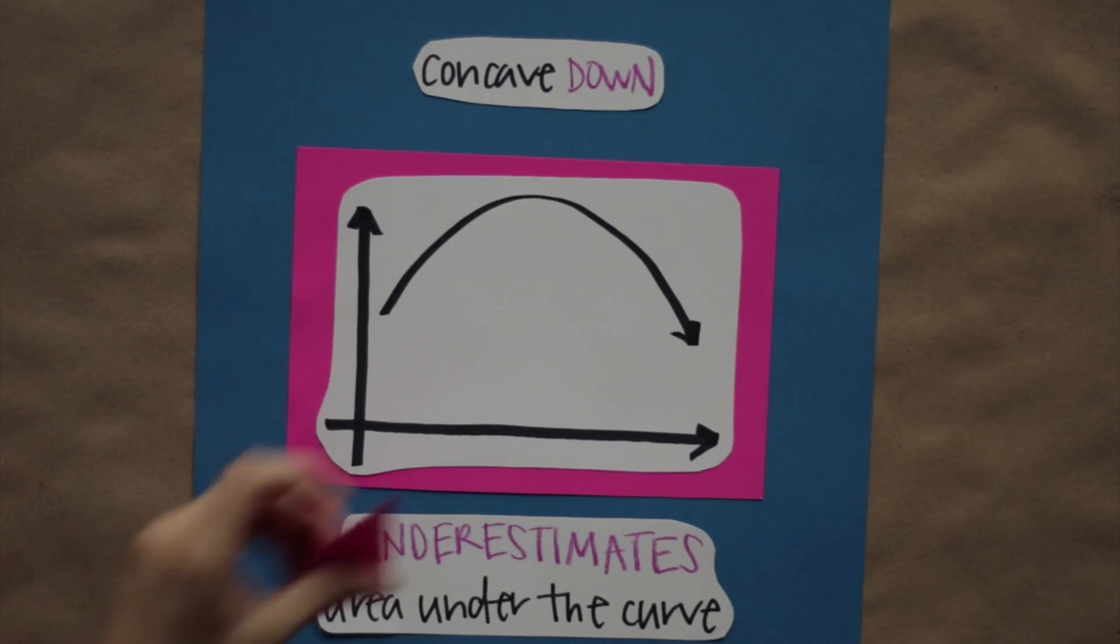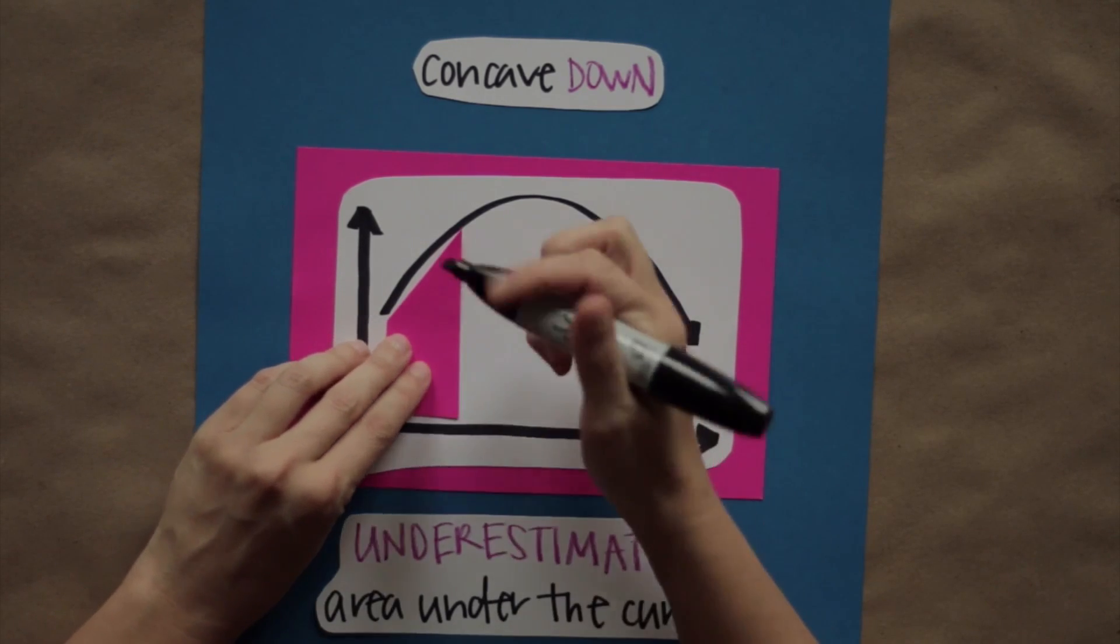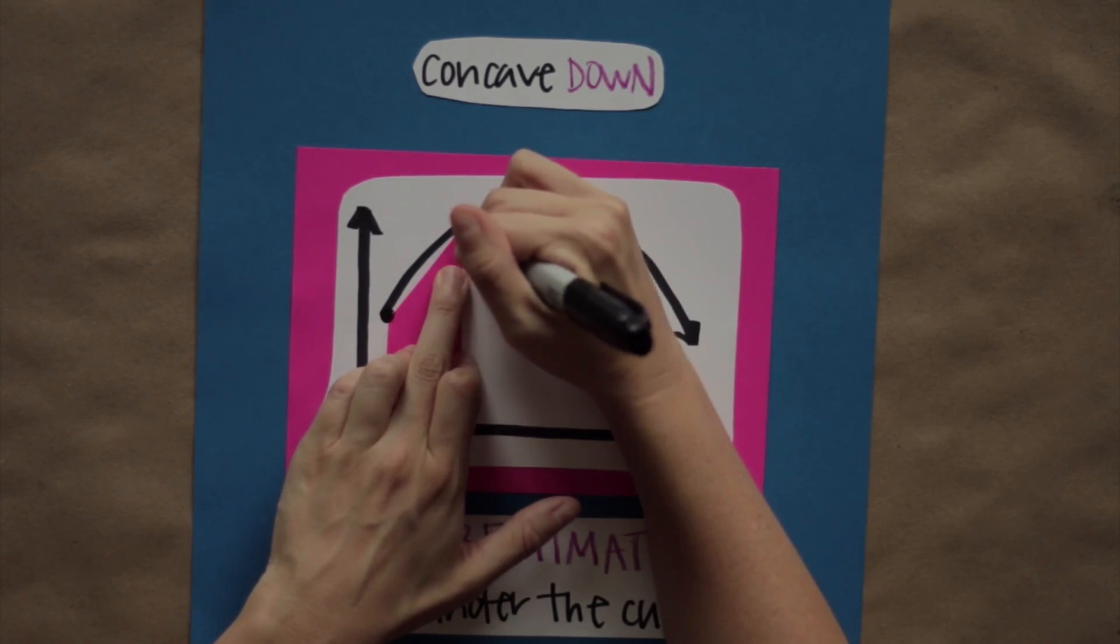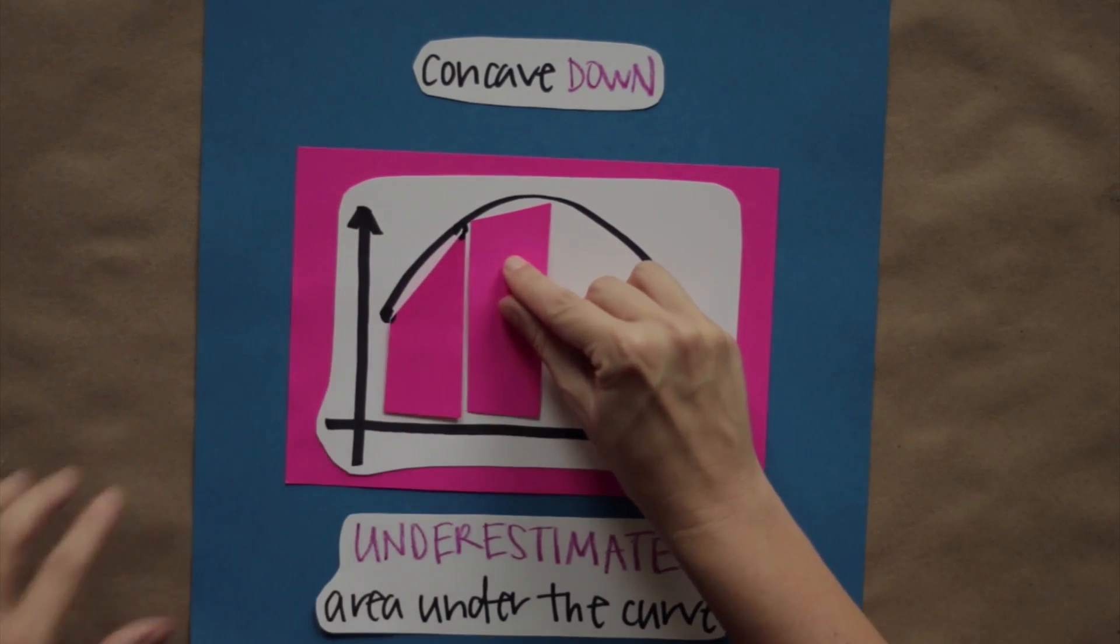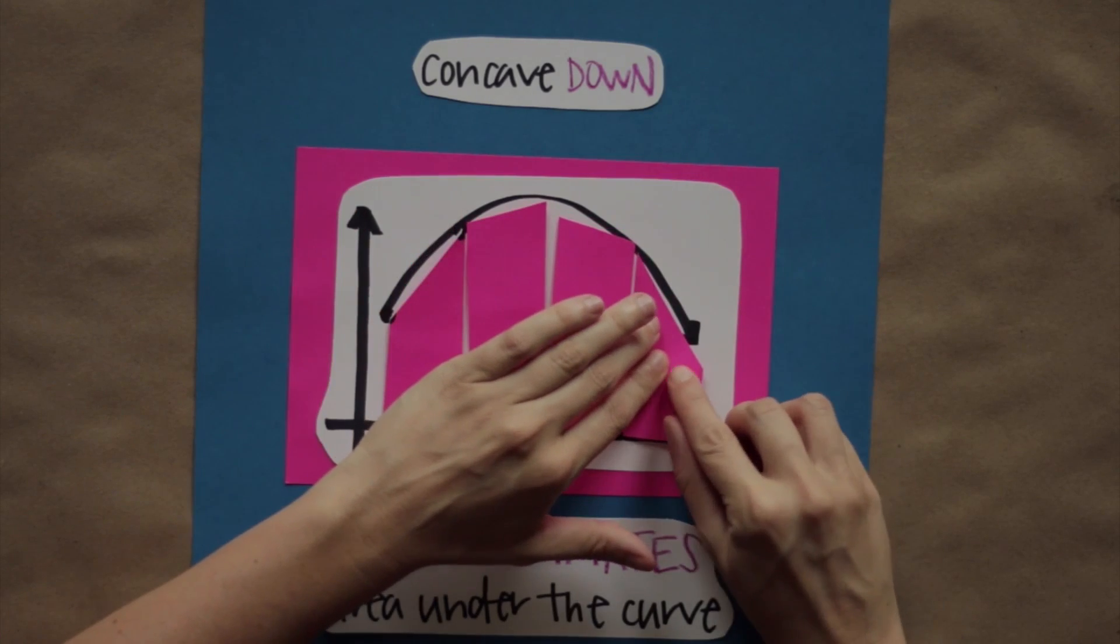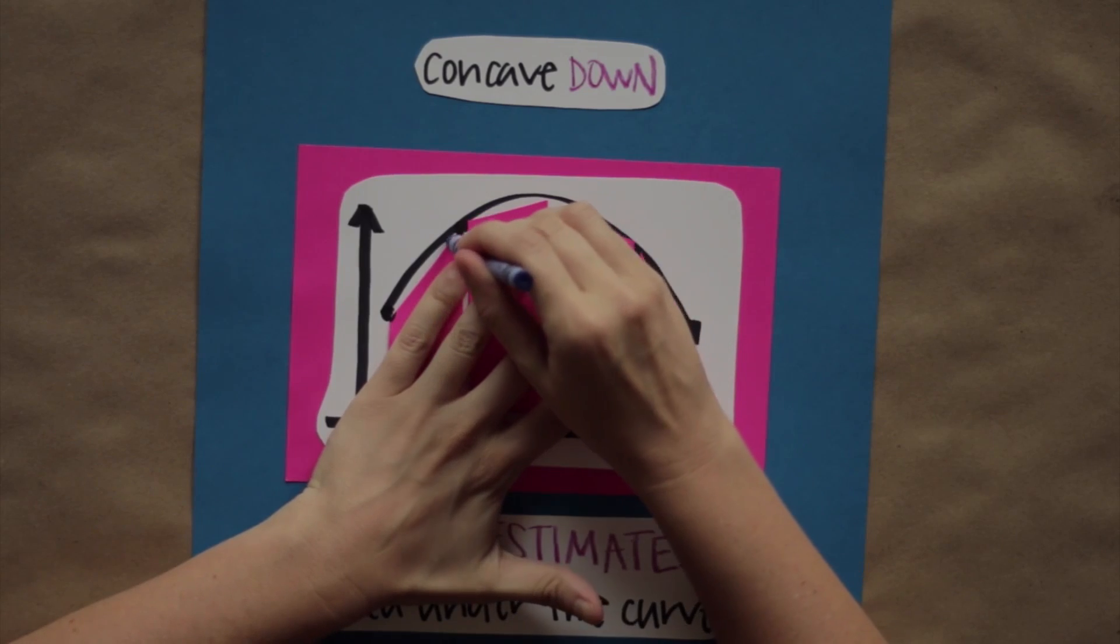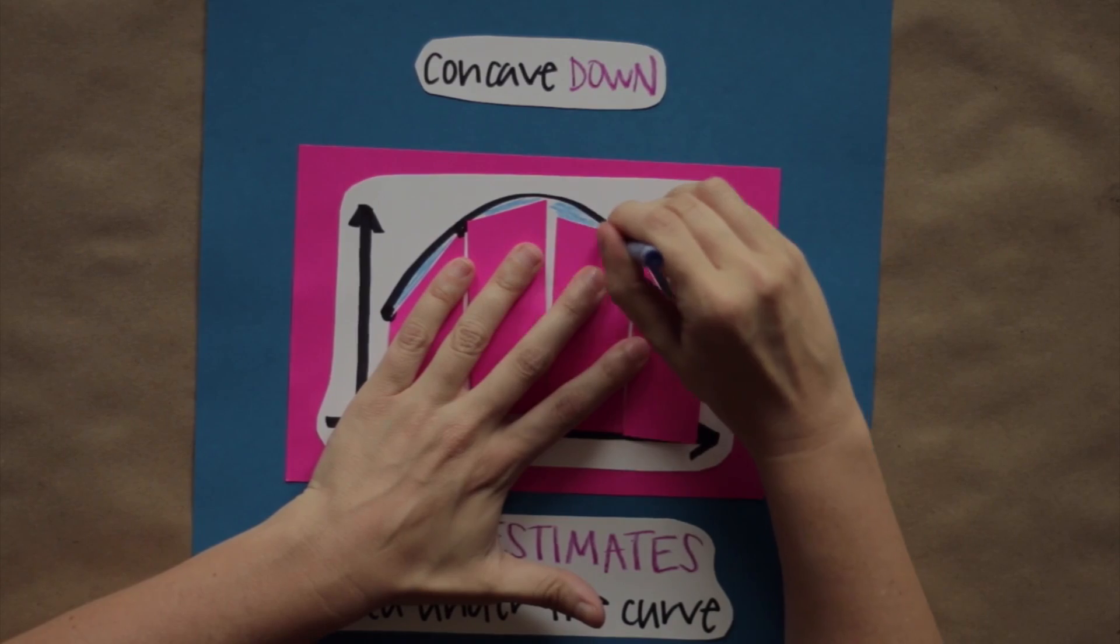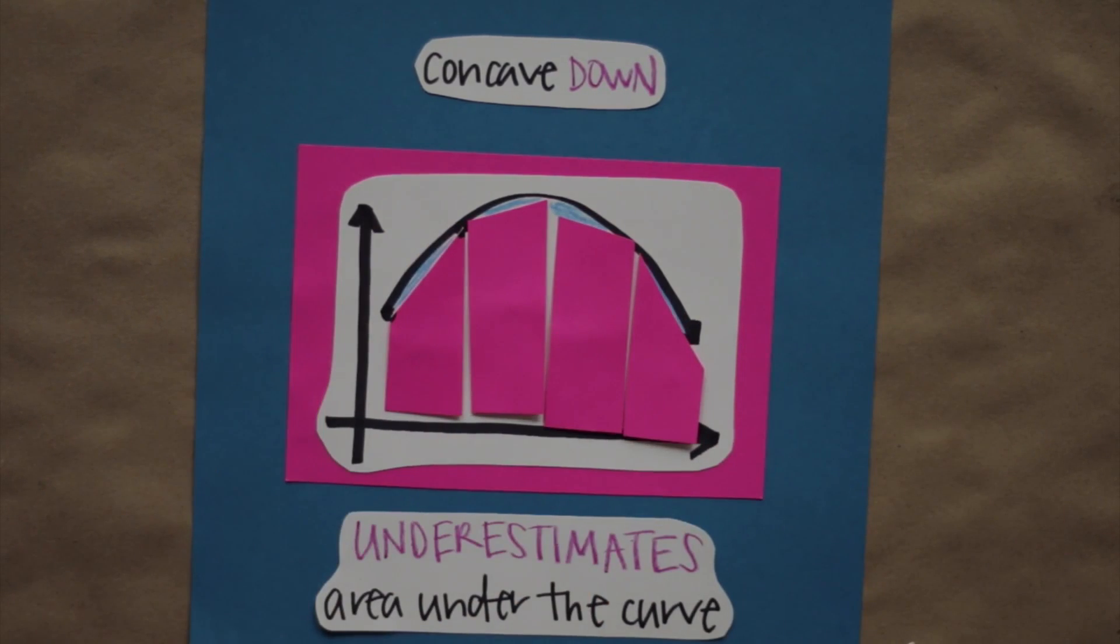Here's why. When you're drawing trapezoids to approximate the area, you always connect the left and right sides of the trapezoid to the curve, and then you connect those points to form the top of the trapezoid. So if the curve is concave down, you'd connect your points, and then you'd end up with all these little gaps at the top. Those gaps are part of the area under the curve, but they don't get included in the trapezoidal rule estimate. So in this case, trapezoidal rule is going to underestimate the area.